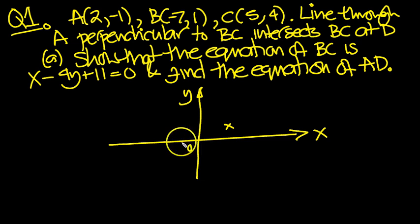And then B is -7, 1. So go along to -7, and up 1, so I'll put it there. And C is 5, and up 4. So I'll put that there, I think. 5 and 4. I'll put it here.